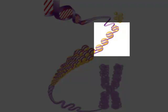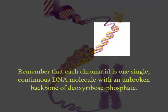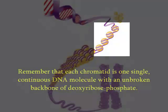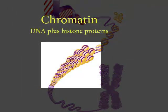Those histones in groups, with the DNA double helix wrapped around them, are called nucleosomes. Then those nucleosomes with the linker DNA that holds them together are called chromatin.